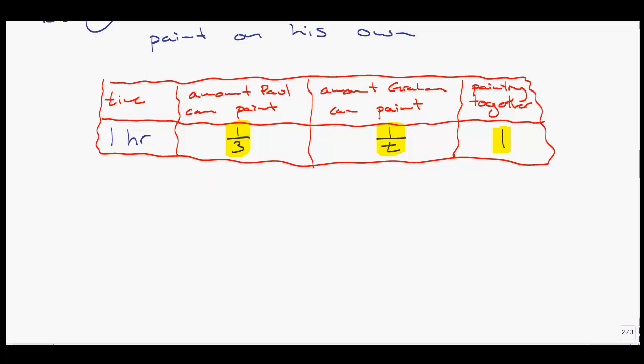Let's give this a try. We have one third, the amount Paul can paint an hour. We have one over t, the unknown amount Graham can paint. When we add Graham and Paul together, in one hour they can paint an entire door. I'm going to achieve a common denominator, which is 3t. Once we have a common denominator, we can get rid of it. Multiply the 3 by t, so 1 times t is t. This becomes 3. And multiply the 1 by 3t, giving 3t.